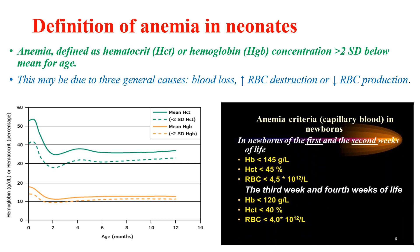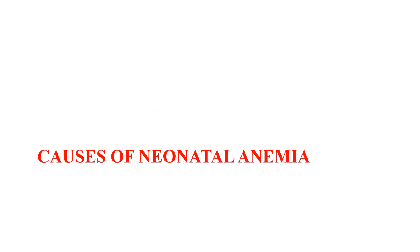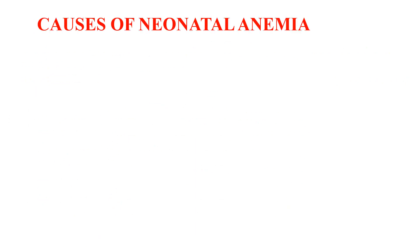So in newborns of the first and second weeks of life, hematocrit less than 45% is defined as anemia. After the third week of life, hematocrit less than 40% or hemoglobin less than 12 g/dL is used as the cutoff point for anemia in newborns. Neonatal anemia is either caused by decreased production, increased destruction, or blood loss.